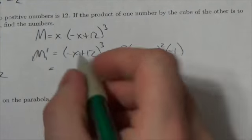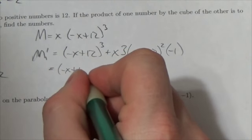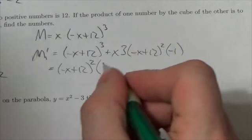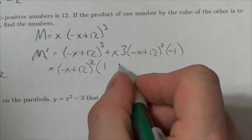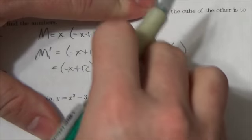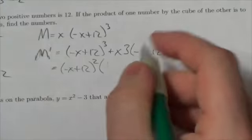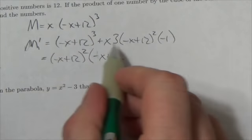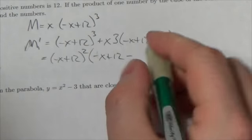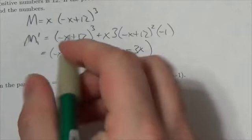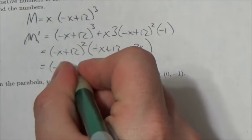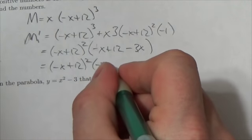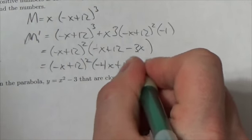I have got a negative x plus 12 squared, common to both terms, which is going to leave me with a 1. It's going to leave me with a 1 of those there, minus, and it looks like 3x. So this is negative x plus 12 squared, what do we got here, minus 4x plus 12.